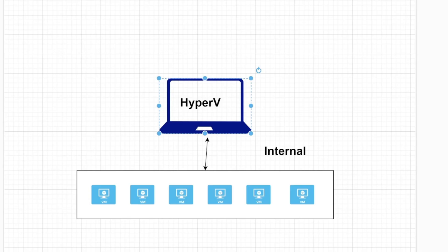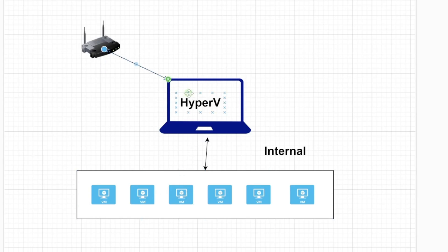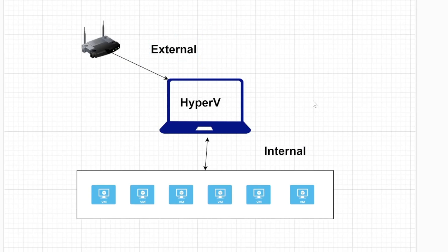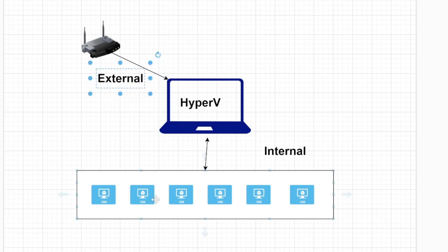But suppose if you have a Wi-Fi router here, and it is connected to your laptop and you want these machines also to connect to the Wi-Fi network. In that case, you will be creating the virtual switch called external. External means that external to this particular laptop, so this particular virtual machine will be external.